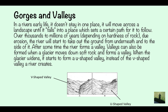Gorges and valleys. In a river's early life, it doesn't stay in one place. It will move across the landscape until it falls into a place which sets a certain path for it to flow. Over thousands to millions of years, depending on the hardness of rock, due to erosion, the river will start to take ground from underneath it and to the side of it. After some time, the river forms a valley.